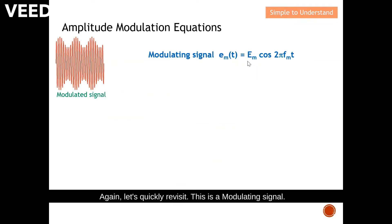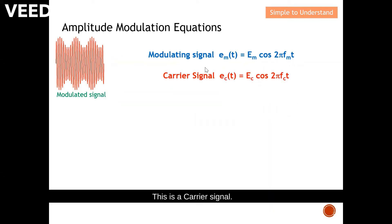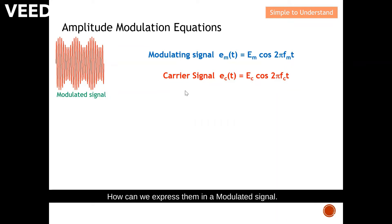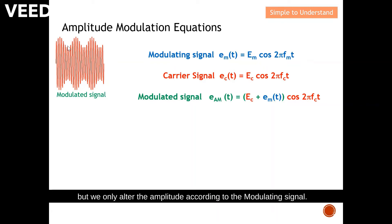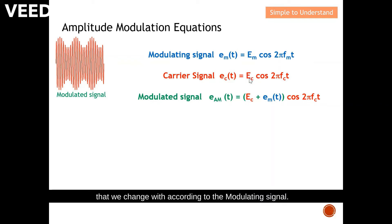Let's quickly revisit. The modulating signal has a peak voltage em and a frequency of fm. The carrier has an amplitude of ec and a frequency of fc. For the modulated signal, remember that we change the amplitude — it has exactly the same frequency as the carrier signal, but we alter the amplitude according to the modulating signal. You can see that this part of the modulated signal is the portion that changes according to the modulating signal.